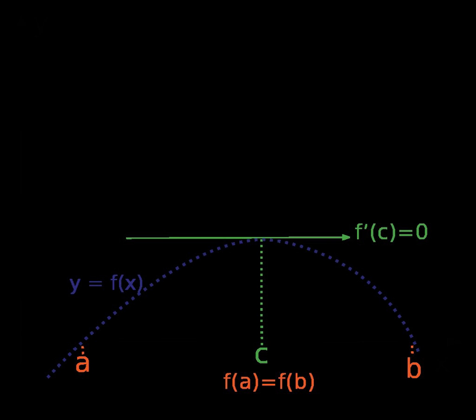This version of Rolle's theorem is used to prove the mean value theorem, of which Rolle's theorem is indeed a special case. It is also the basis for the proof of Taylor's theorem.